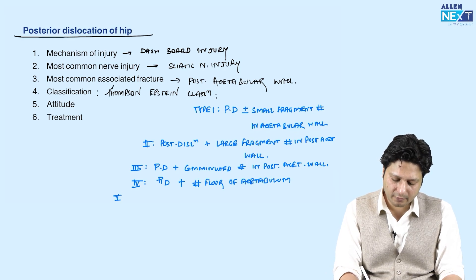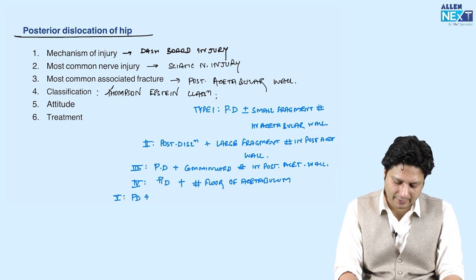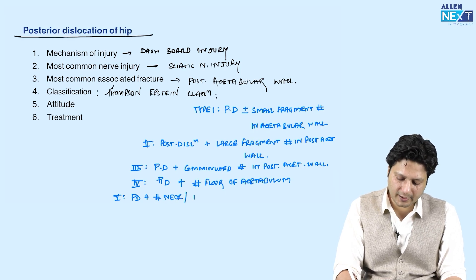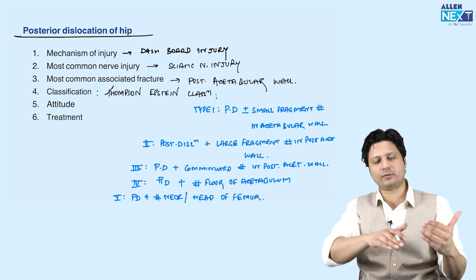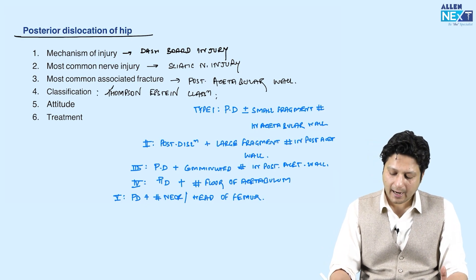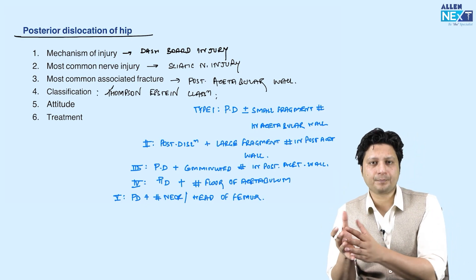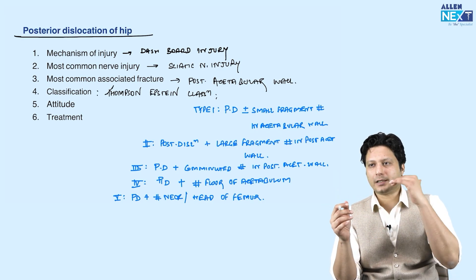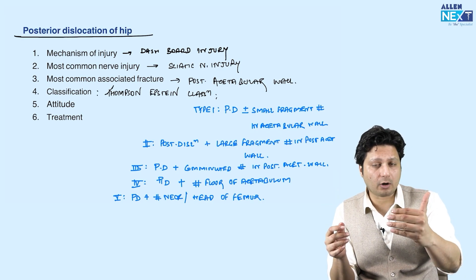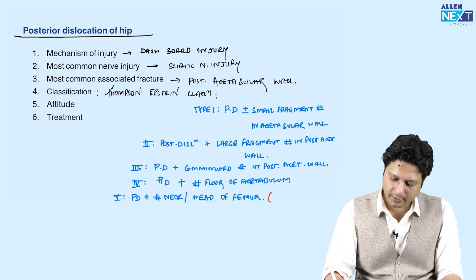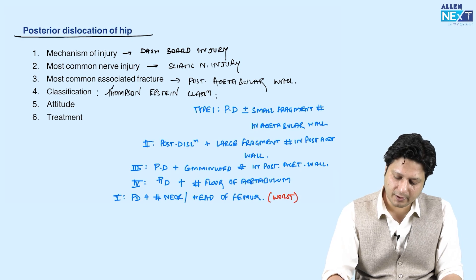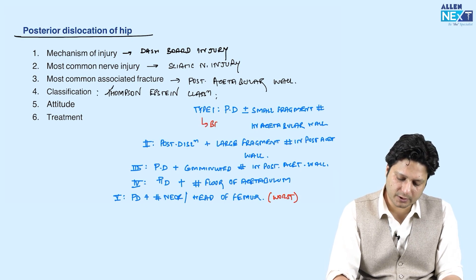Type 5 is posterior dislocation associated with either a fracture in the neck or the head of the femur. Out of these five types, type 1 has the best prognostic outcome while type 5 has the worst prognostic outcome.